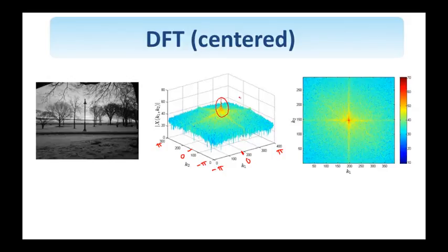The question is how can I center the spectrum as shown here? And one way to do it is by multiplying the image by minus 1 to the n1 plus n2. So this is a checkerboard pattern. It alternates between minus 1 and 1. And why would such a multiplication center the spectrum? Because this is clearly equal to e to the minus jπ(n1 + n2).